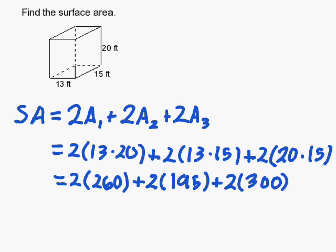Continuing with our multiplication, we get five hundred twenty, plus three hundred ninety, plus six hundred.